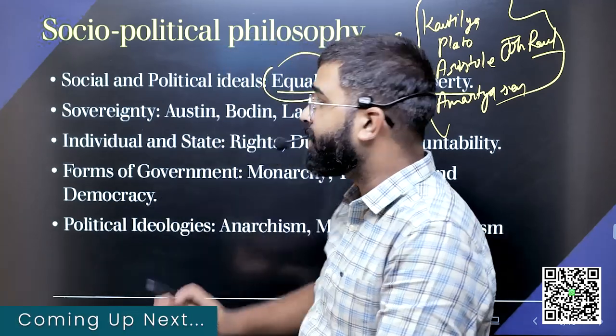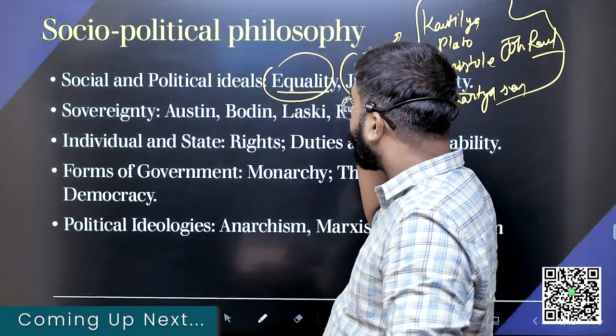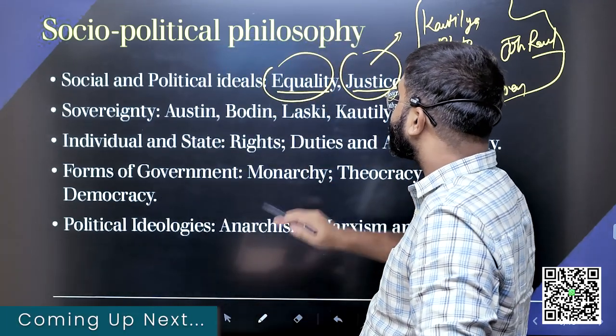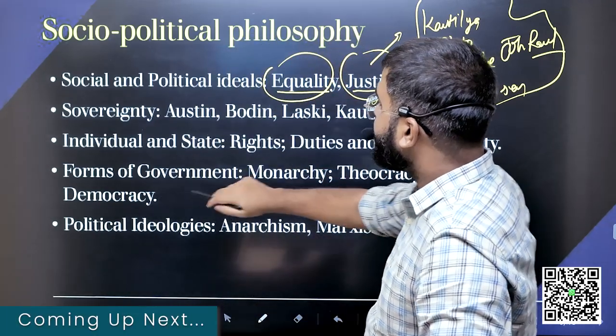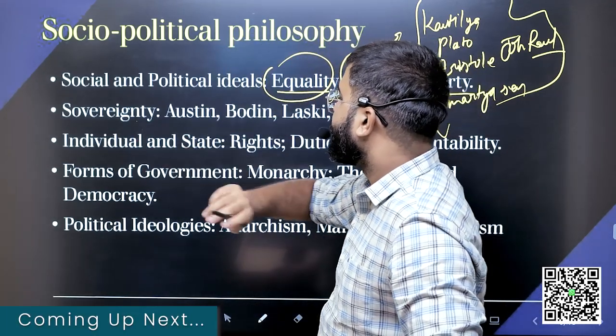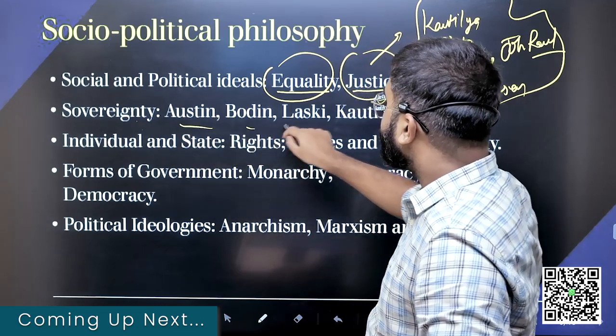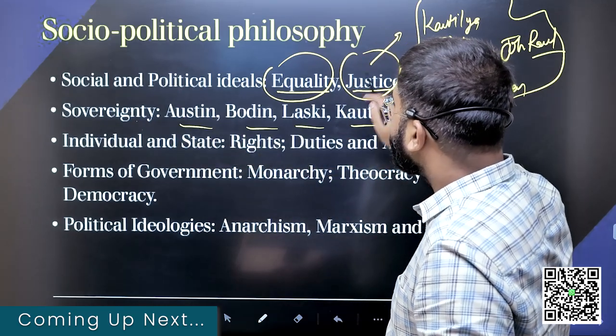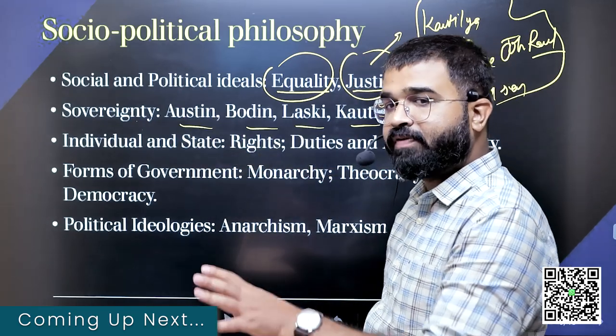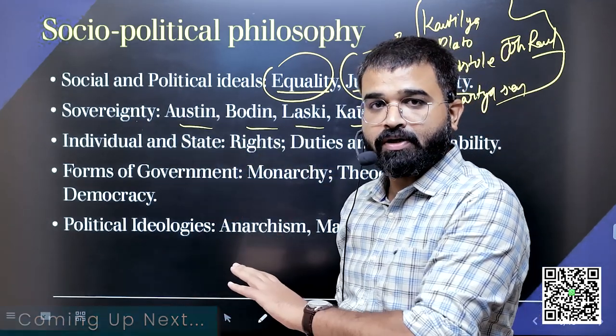Whenever a question is being asked on any of the philosophers, like in sovereignty, Austin, Bodden, Lasky and Kotel are already mentioned.